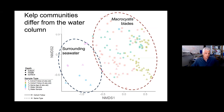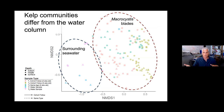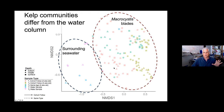The overwhelming observation — not surprising — is that the communities on the blades are different from the water column, consistent with what Anna found. But there is also a big cloud of amplicon variability, and making sense of that was the challenge. Focusing on the centroids of these different clusters, you can see patterns starting to evolve.